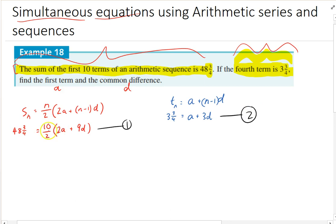I think maybe this equation could use a bit more work. That one looks really neat. This one's still got brackets and stuff going on. So I'll call this 48 and 3 quarters equals 10 over 2 is just 5. And then I can do the distributive law. So 5 times 2a is going to be 10a. 5 times 9d is going to be 45d.